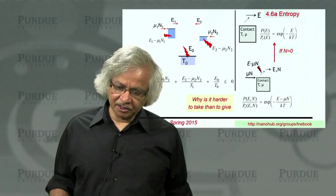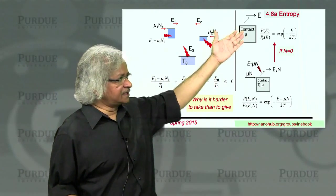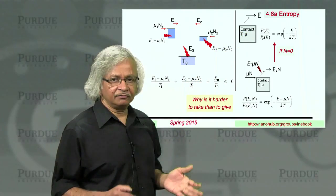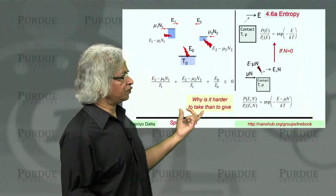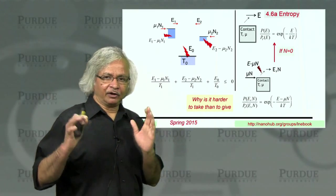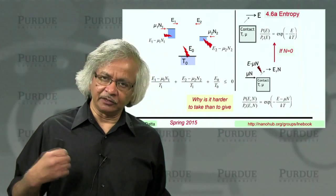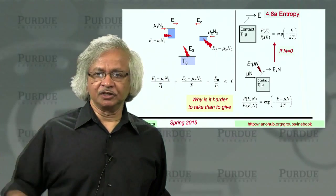That means when E is positive, that ratio is very small. When E is negative, the ratio is high. And that's what you could kind of put in a one-liner, that for any contact, it is much harder to take energy from it than to give to it. The question is why is that?